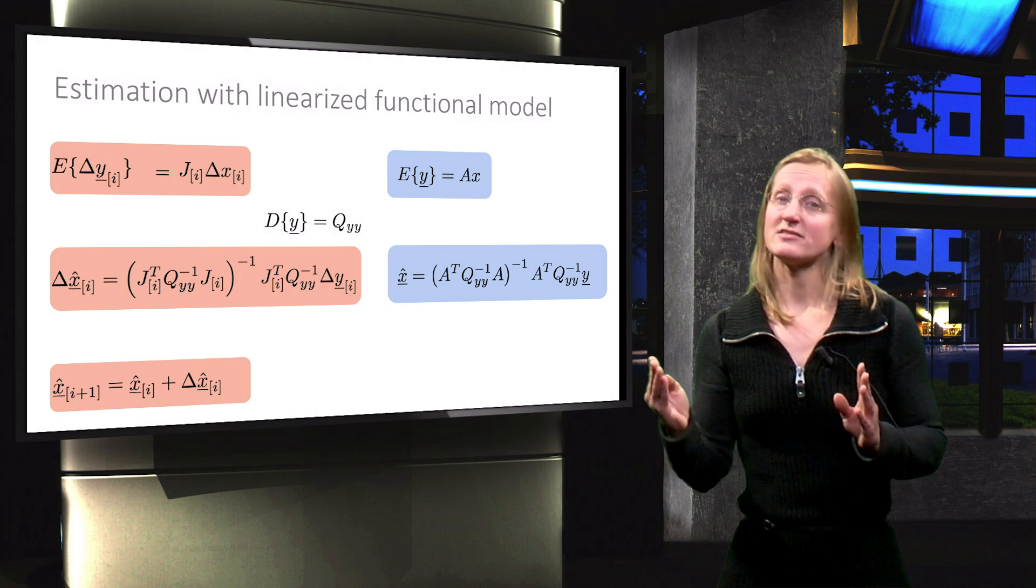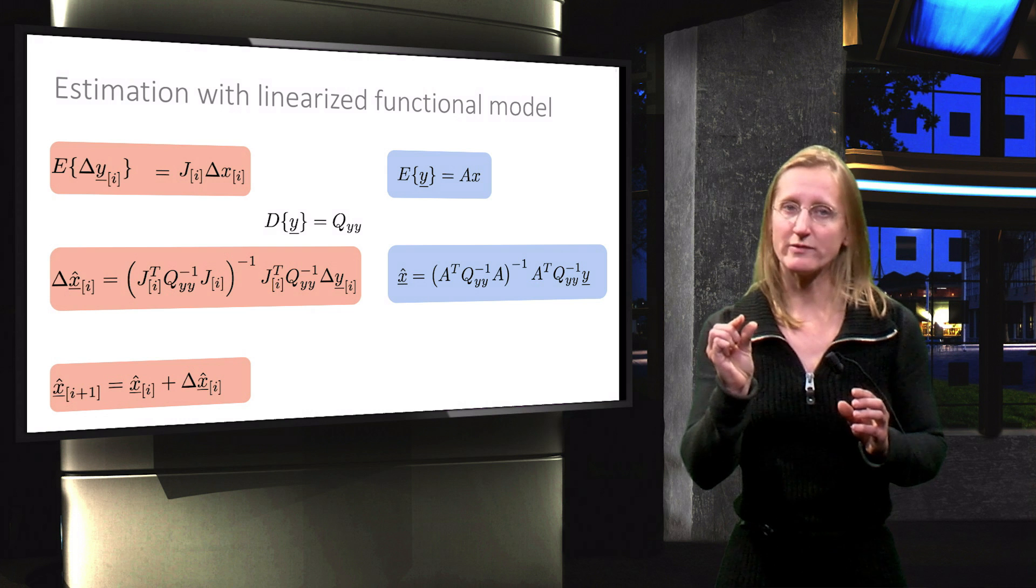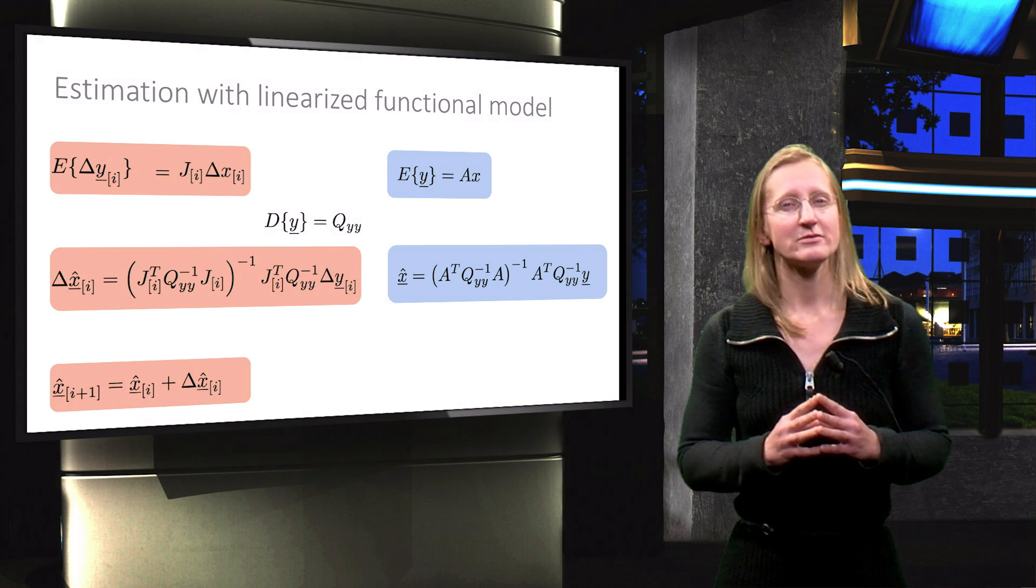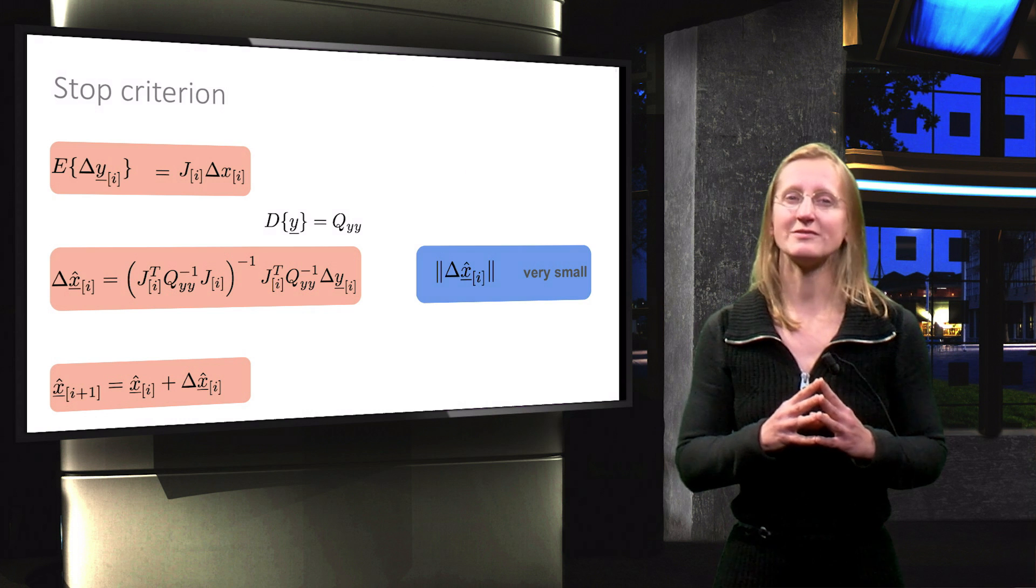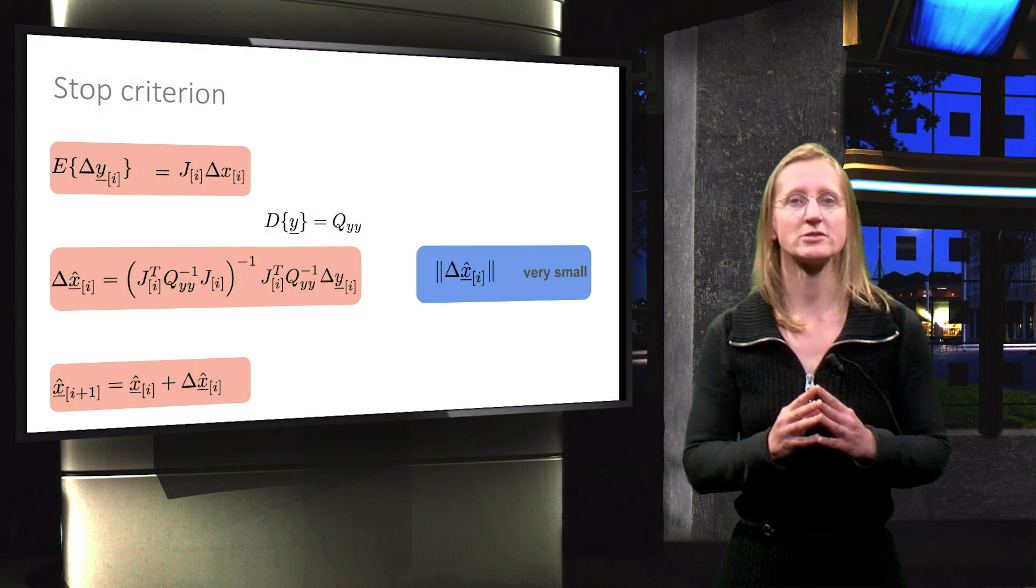Recall that in the scalar case, the stop criterion for the iteration was simply when the delta x was very small. Since x is now a vector, this should be changed to for example the requirement that the length or norm of the delta x vector is very small.